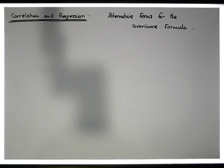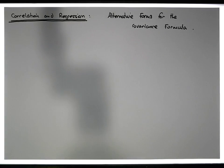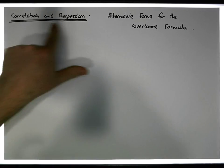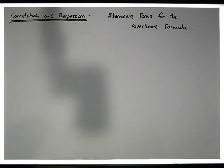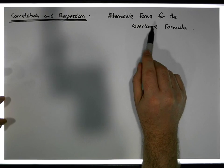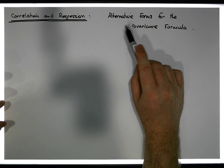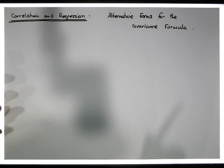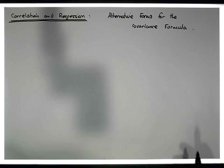Hi guys, this is Jonathan Lambert with the Mathematics Development and Support Service at the National College of Ireland. This short video — another in our series dealing with correlation and regression — is going to concentrate on the covariance formula, and more importantly some alternative ways of writing the covariance formula, which helps when it comes to hand calculations of the covariance.